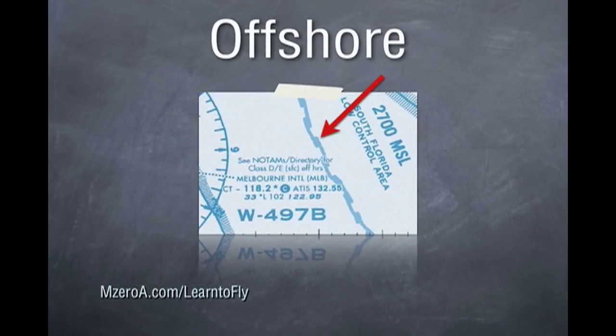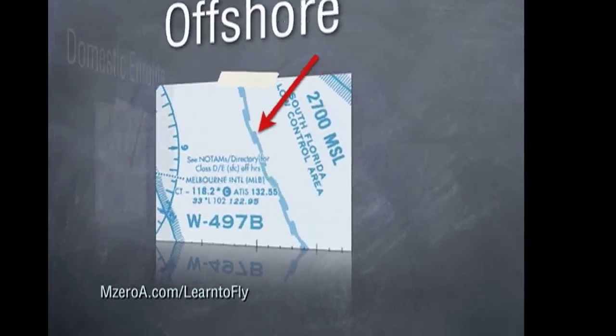Here's an offshore. You'll only find these on the coast, and they're shown by the zipper line, usually followed by an altitude.